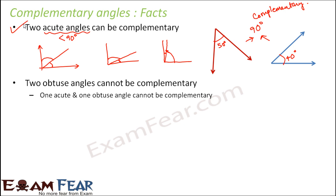Can two obtuse angles be complementary? No, they cannot. An obtuse angle is one whose measure is greater than 90 degrees. Since we need the sum to be 90 degrees for complementary angles, if one angle itself is greater than 90 degrees, there is no way it can add up with another angle to form 90 degrees. So two obtuse angles can never be complementary.